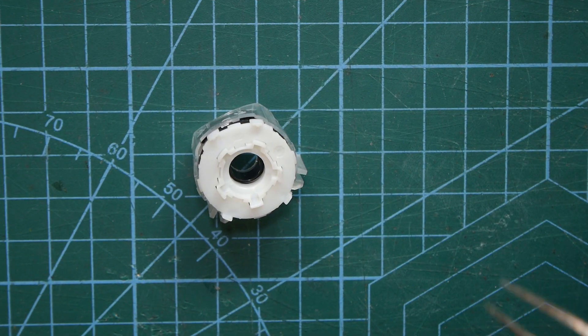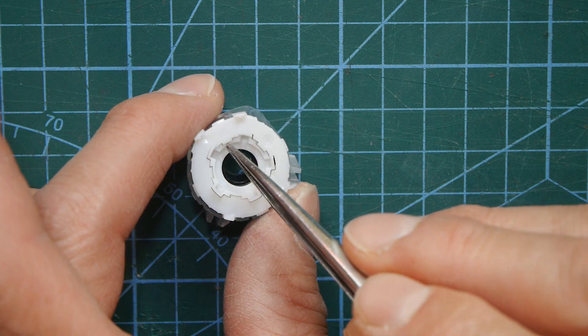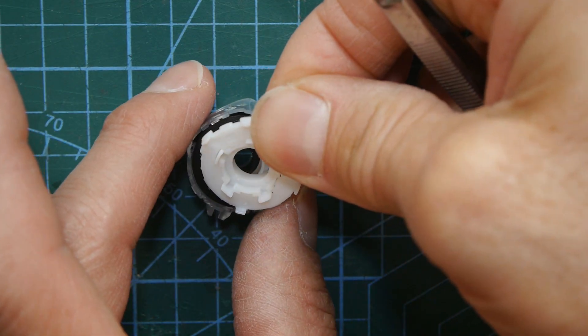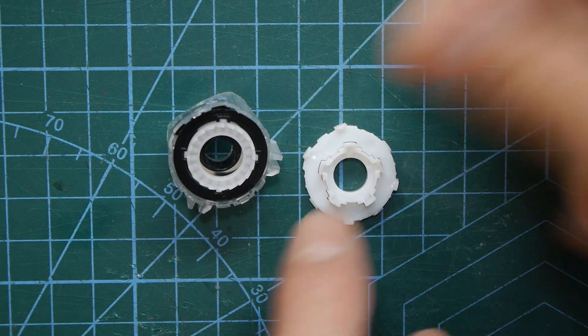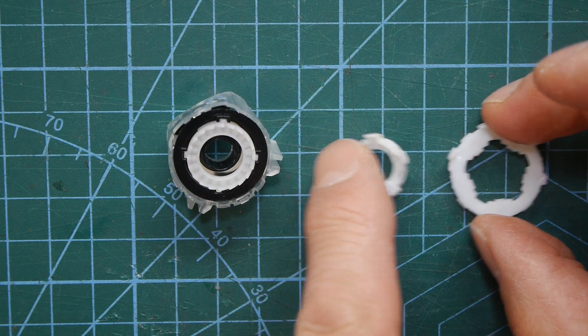So the first bit to come out is these white parts and it's actually two bits. I'll take the top one off. There it is and there's another one underneath it so those two key together and I'll explain what they do in a minute.